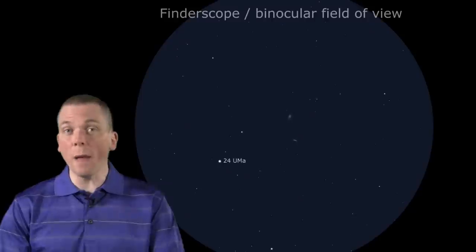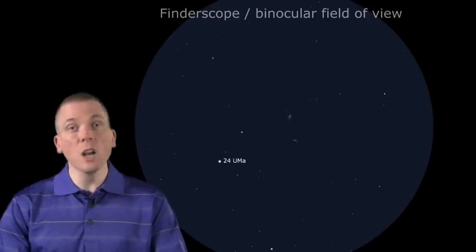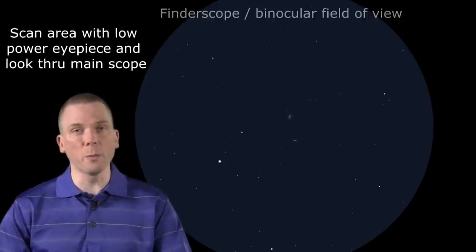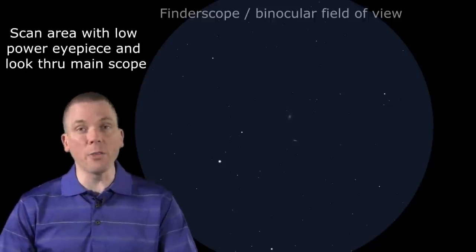Use very low power initially. If you do not see the galaxies, slowly scan the area with the slow motion controls of your telescope. The movement may help you make out the faint glow.